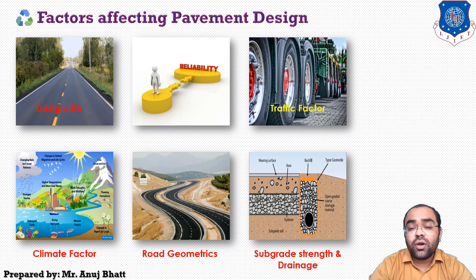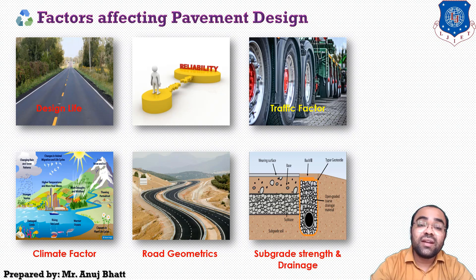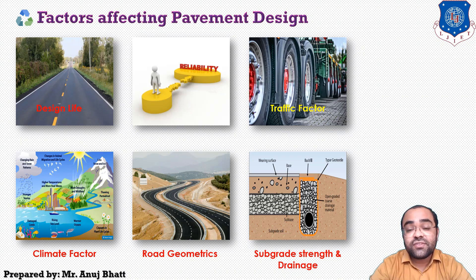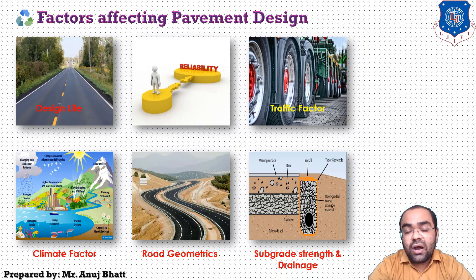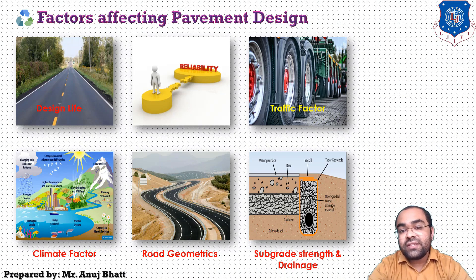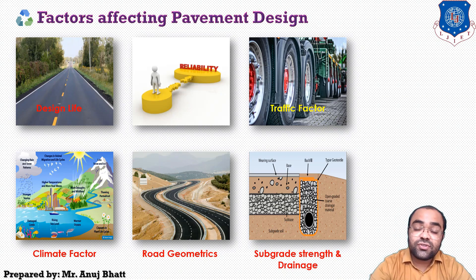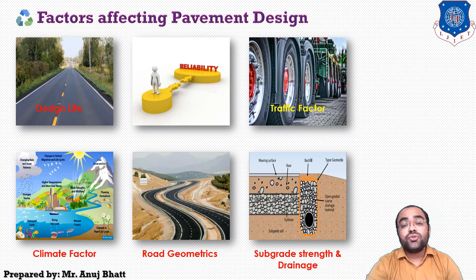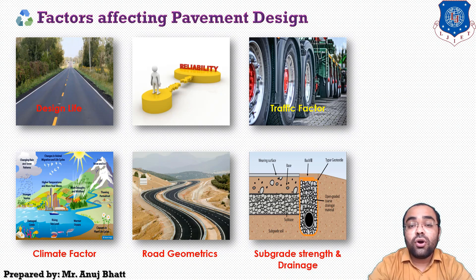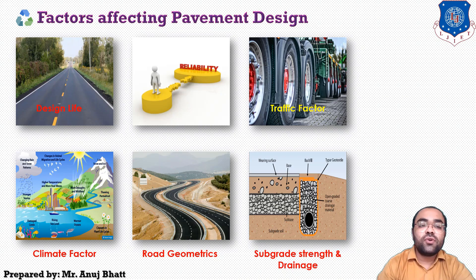Subgrade strength and drainage are also factors that affect pavement design. Subgrade strength and compacted density significantly affect the design. Surface and subsurface drainage from adjoining land also affects subgrade strength. Material properties are another factor affecting the structural design of pavement; we generally choose the most severe value of those materials applicable for that particular pavement structure.